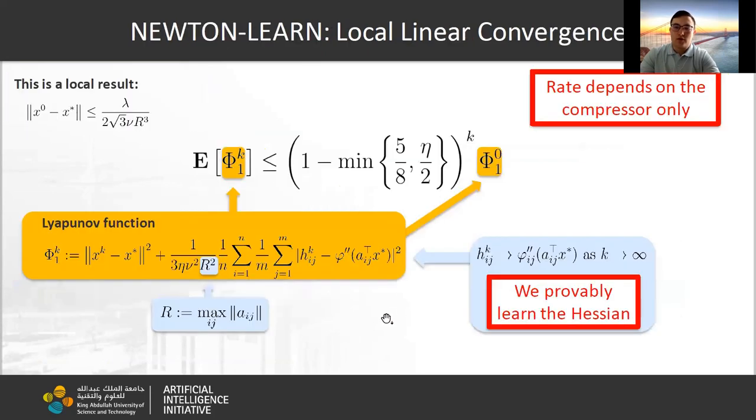We have proved local linear convergence rate for this algorithm for some Lyapunov function. As you can see, the rate doesn't depend on the condition number. It depends only on the compression, and we indeed learn the second derivative of loss function at the optimum.